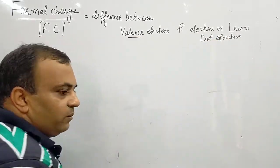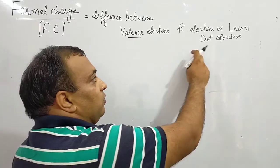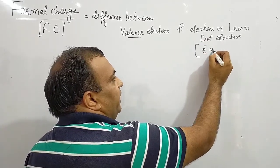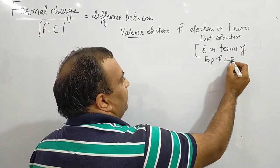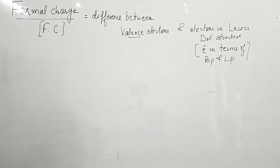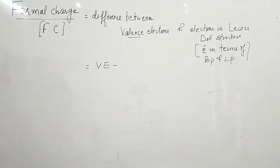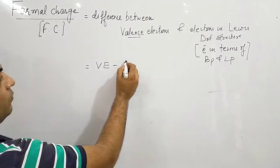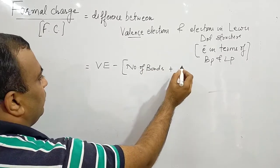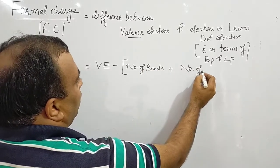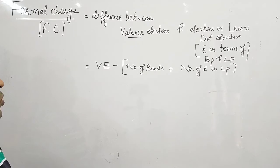Valence electrons in Lewis dot structure are the electrons used in the form of lone pair and bond pair. Electrons in Lewis dot structure means electrons in terms of bond pair and lone pair. That difference is said to be the formal charge. So the formula is: formal charge is equal to valence electrons minus number of bonds plus number of electrons in lone pairs. This is the formula we have to use to calculate the formal charge.